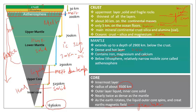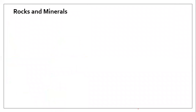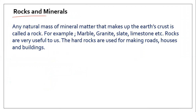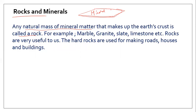That covers the three layers of our Earth. Now let's come to rocks and minerals. Rocks are the natural mass of mineral matter that makes up the Earth's crust. Whatever forms the uppermost part of the Earth is called rock.